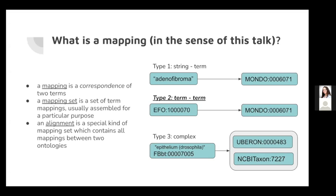I've seen this term 'mapping' used in many different contexts, so I just want to clarify: we use the same notion of mapping that Ernesto was using in his talk — basically a correspondence of two terms. There are other kinds of mappings, like mappings from a string to a term, or more complex ones like a species-specific anatomy term mapping to a more general anatomy term plus a taxon restriction. We are generally more concerned with the term-to-term type, though there are discussions in the SSSOM community about the others.